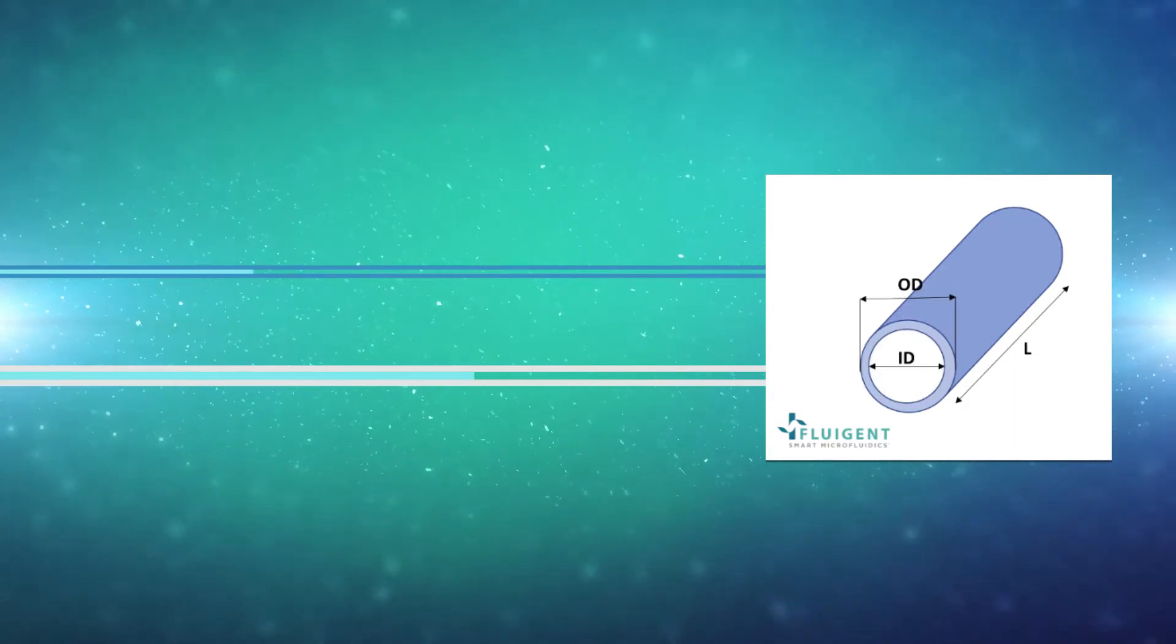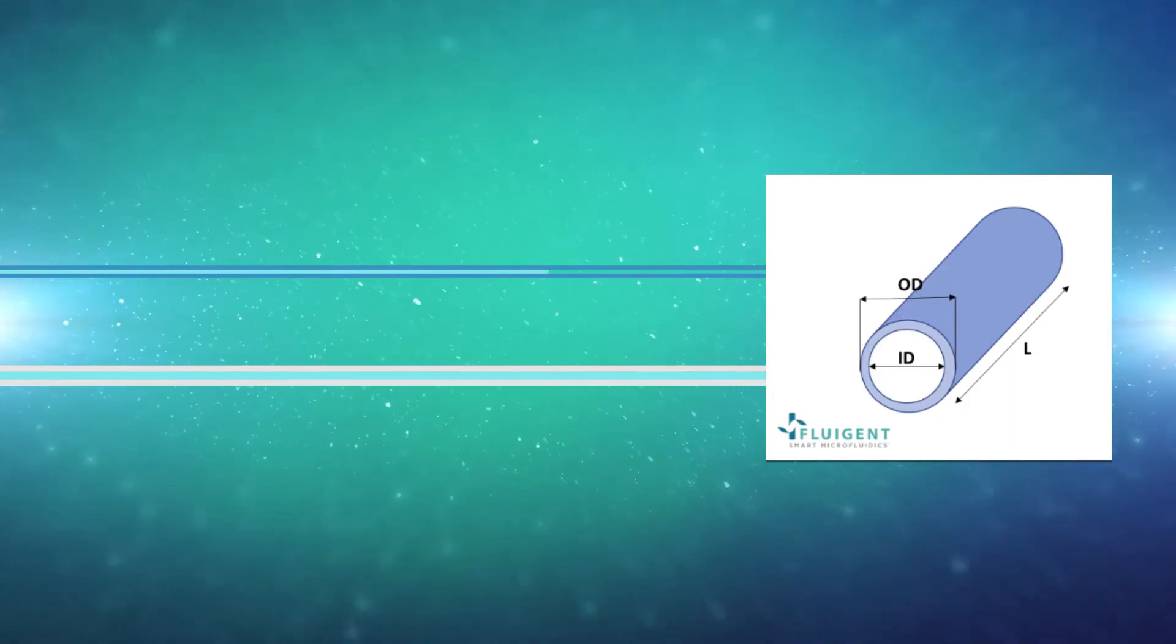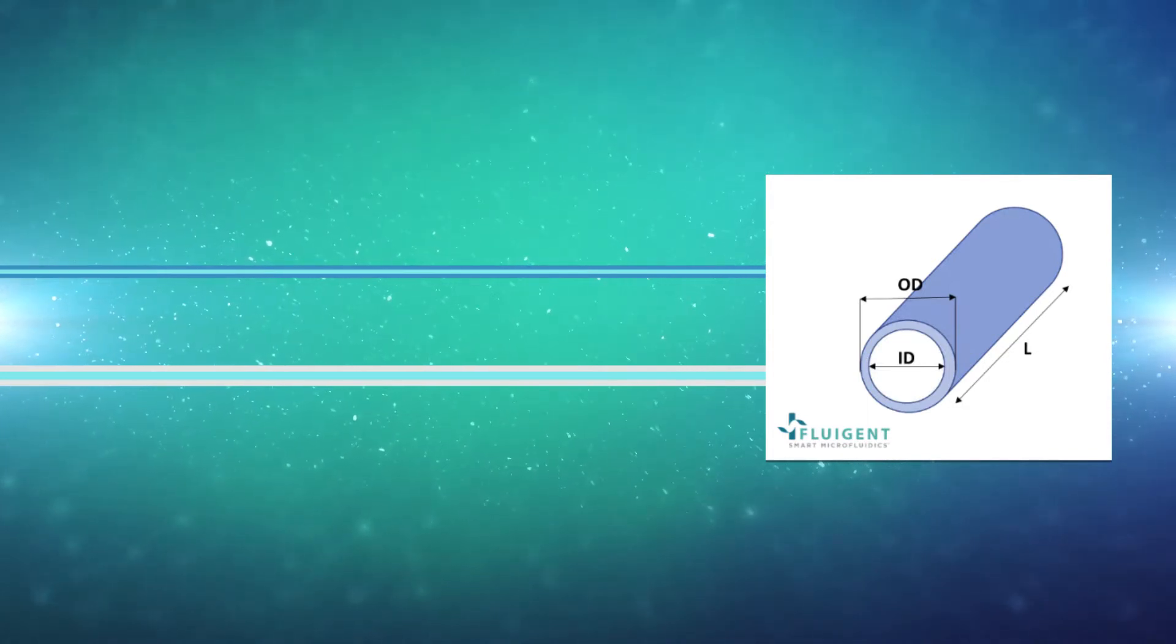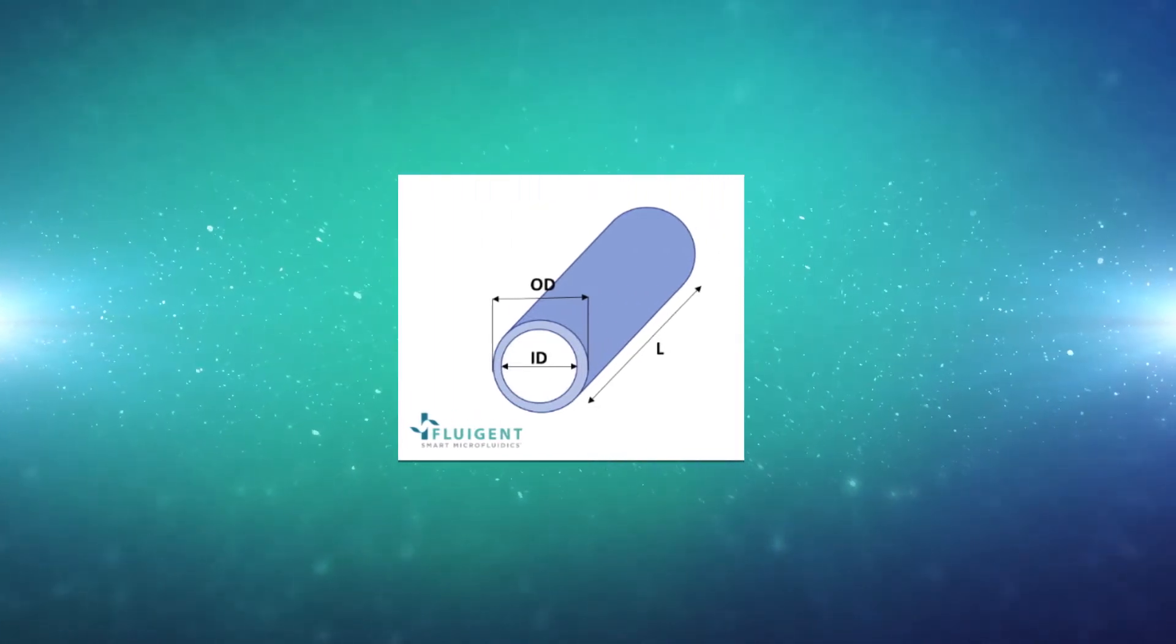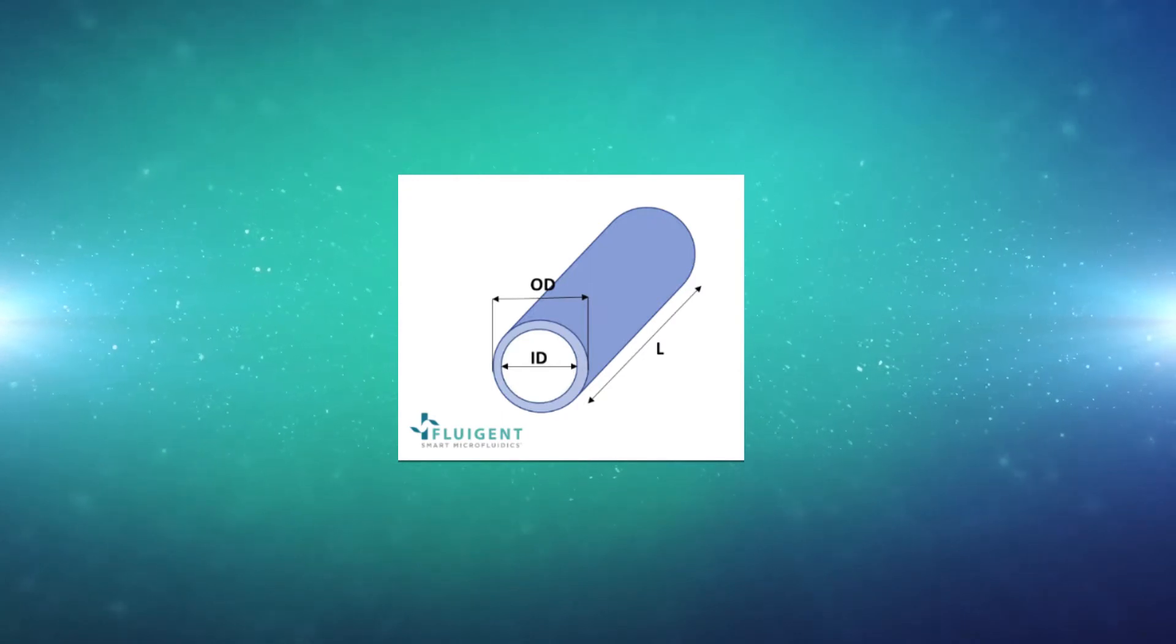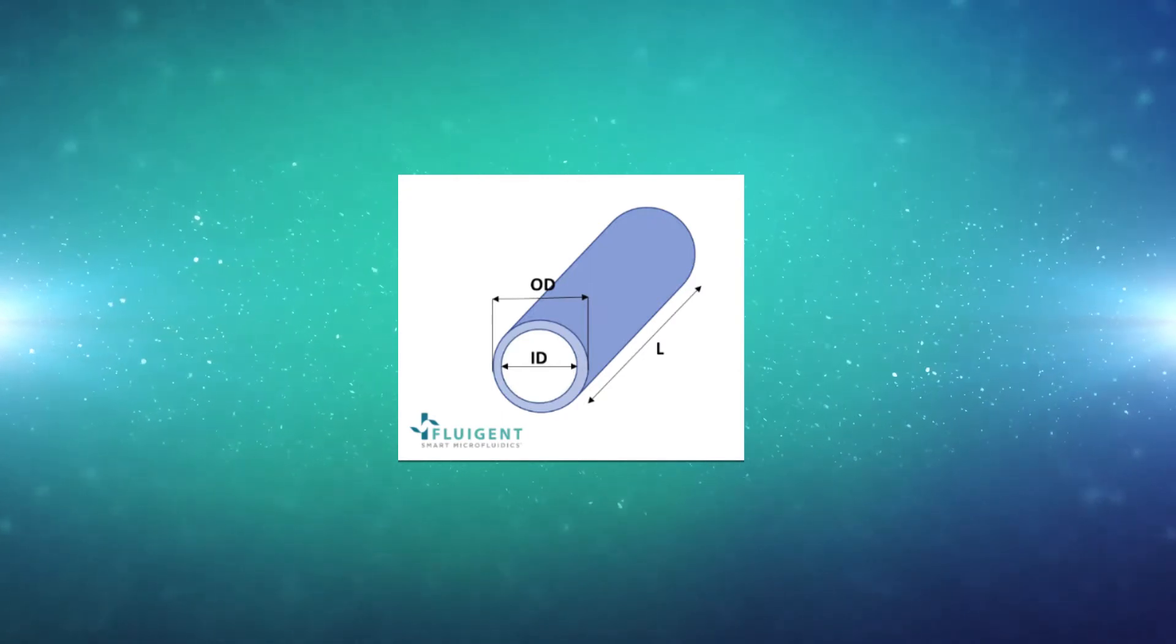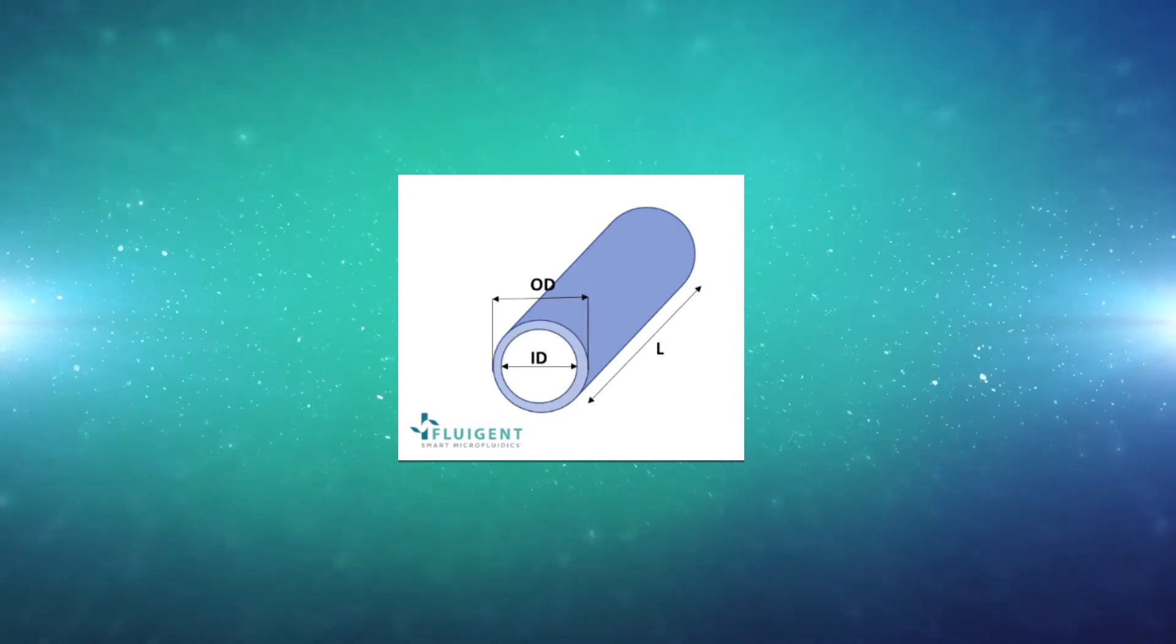The inner diameter plays a significant role in the resistivity brought by the tubing. The smaller it is, the more resistant the tubing will be. L means length.